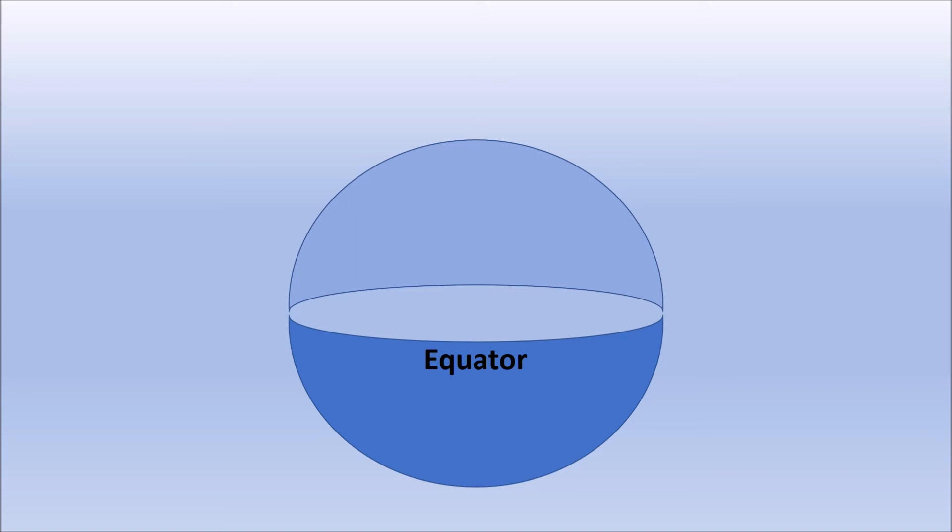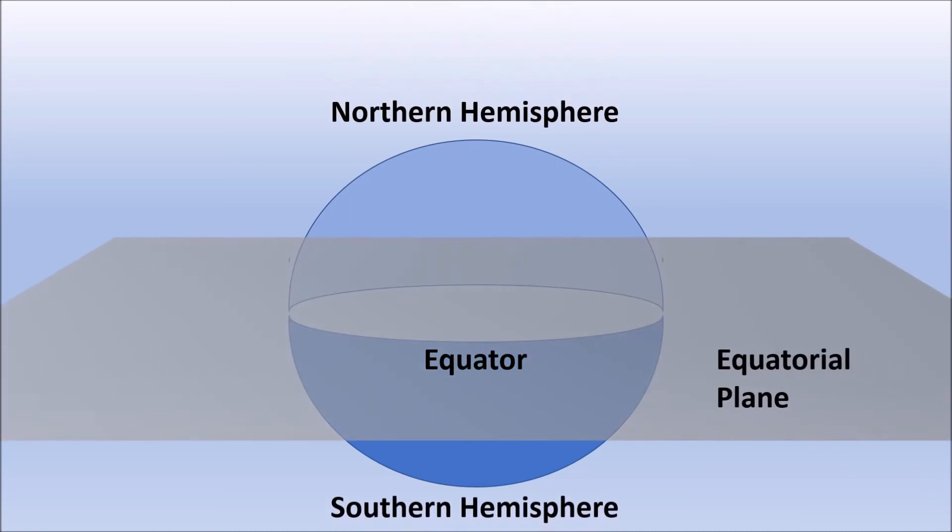So here is my simplistic earth. As we cut the earth in half, we divide it into northern and southern hemisphere. Now imagine this 2D rectangle laid at the cut line at equator. We call it equatorial plane.